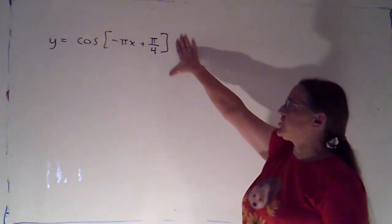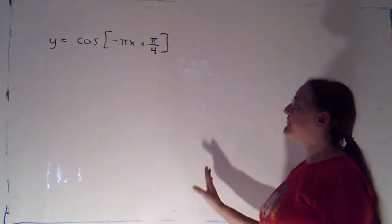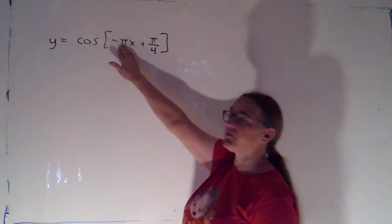If I want to graph this function, cosine of negative pi x plus pi over 4, first thing I want to do is factor out that negative pi.